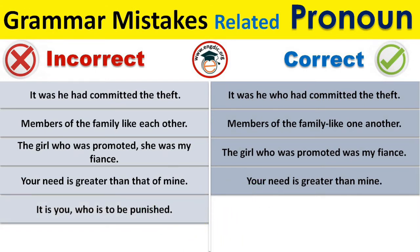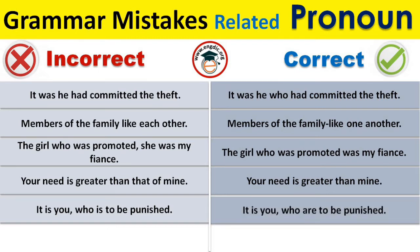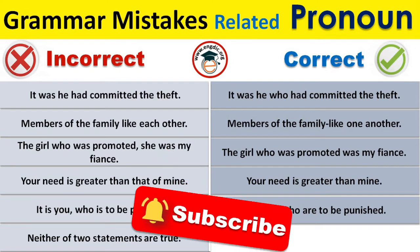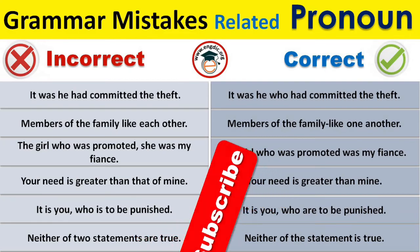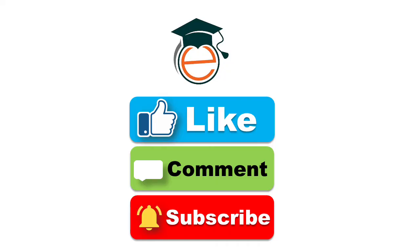'It is you who is to be punished' is incorrect. The correct sentence is 'It is you who are to be punished.' Finally, 'Neither of two statements are true' is incorrect; the correct sentence is 'Neither of the statements is true.' And with this, our today's topic is complete.